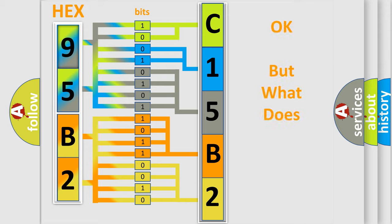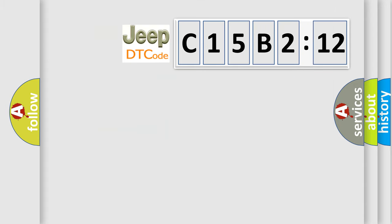We now know in what way the diagnostic tool translates the received information into a more comprehensible format. The number itself does not make sense to us if we cannot assign information about what it actually expresses. So, what does the diagnostic trouble code C15B212 interpret specifically for Jeep car manufacturers?